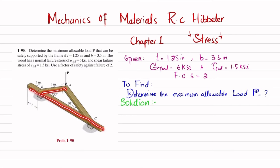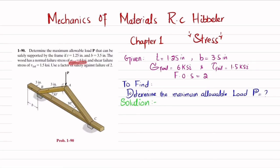You can see this is the frame that is acted upon by load P. The thickness t is given as 1.25 inch, b is given as 3.5 inch, the normal failure stress is 6 ksi, and shear failure stress is 1.5 ksi. We have to find load P for a factor of safety of 2. The first step is to find the internal loading.